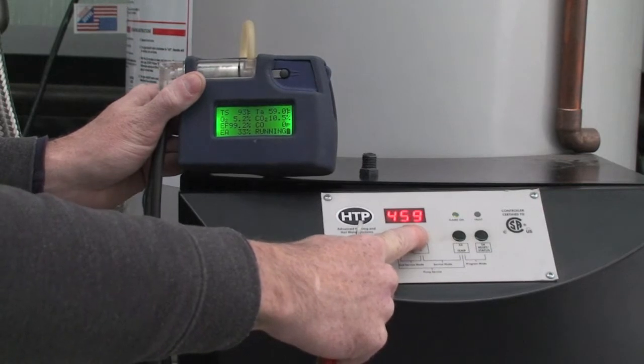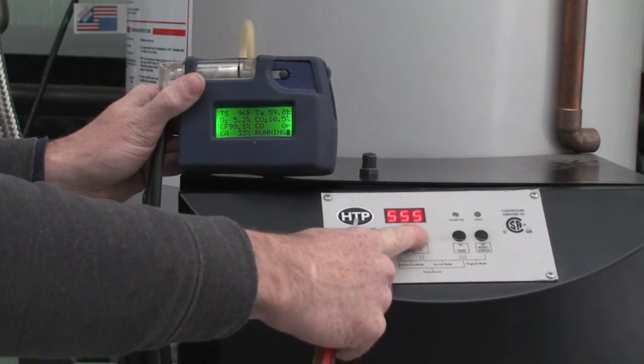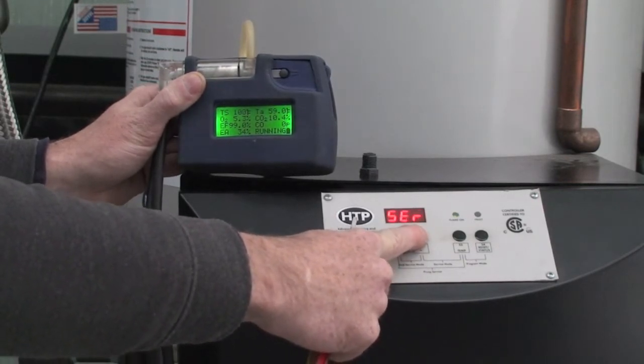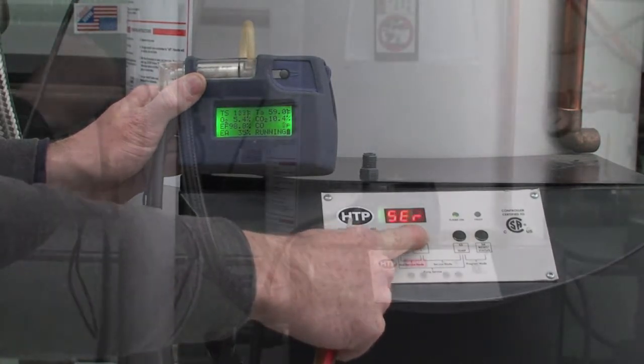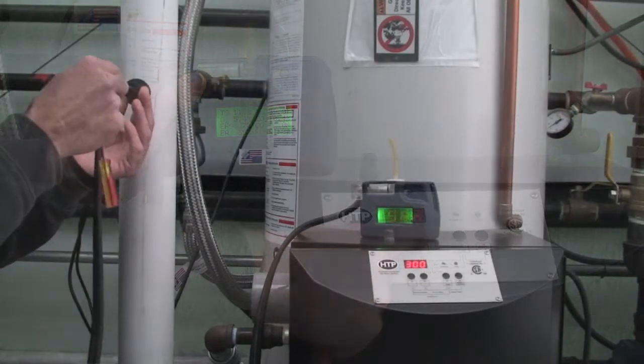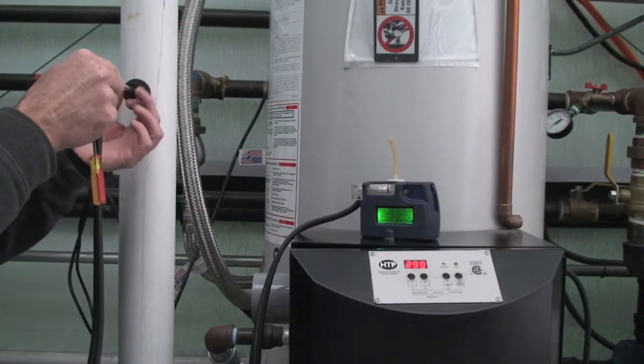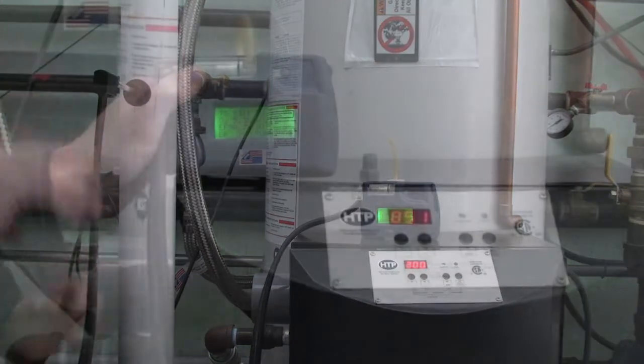Refer to the installation manual for specific fan speeds for particular models. Once unit is in the high fire, insert test probe into test hole and begin to sample combustion. Allow levels to become stable before deciding if adjustment is necessary.